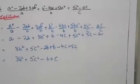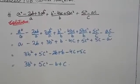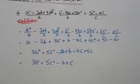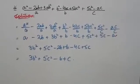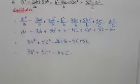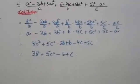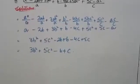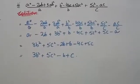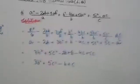So 3b² plus 5c² remains as is. Then minus 2b plus b gives minus b. Then minus 4c plus 5c gives plus c, since 5 is greater than 4. So your final solution is 3b² + 5c² minus b plus c.